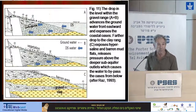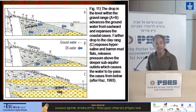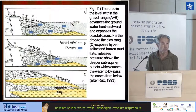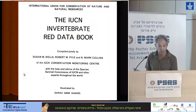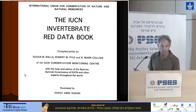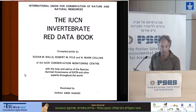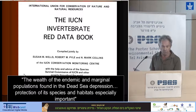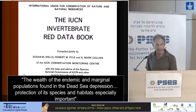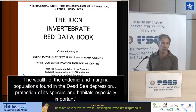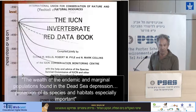The habitats of the Dead Sea springs were blessed by a high number of endemic species, and nobody knows today what happened to those endemic species. You can see the concern of the IUCN in the Red Data Book — here is a quotation from the book itself — and these habitats are, of course, under threat.